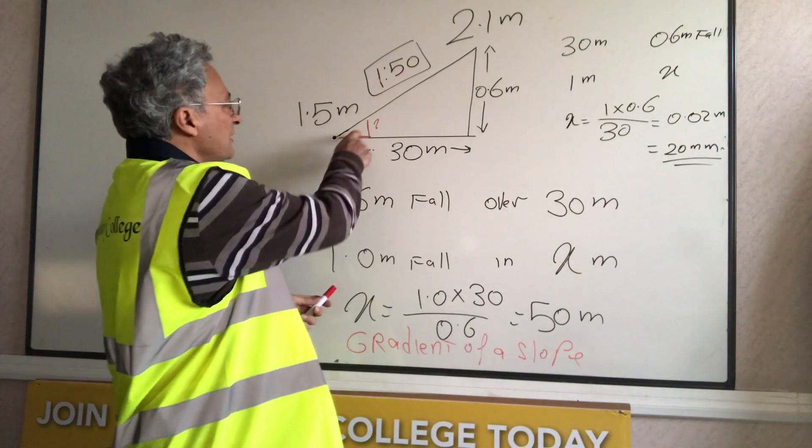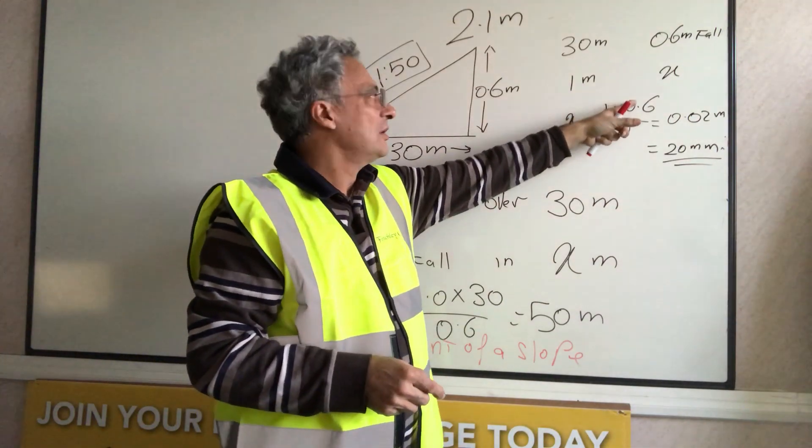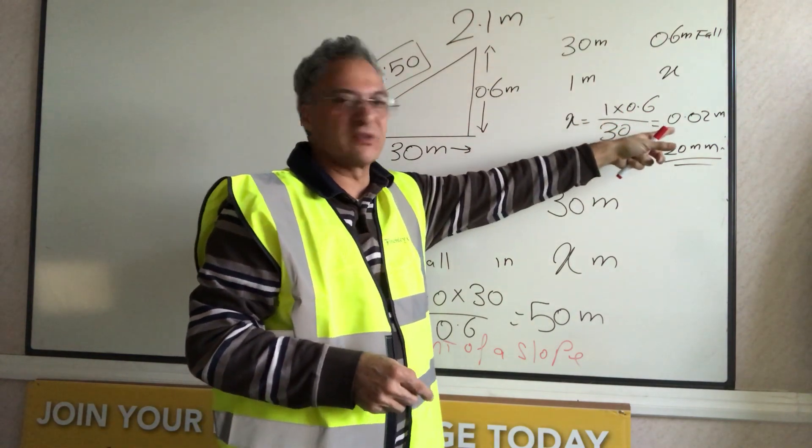To calculate the fall per meter, we do the opposite. We divide the fall over the length.